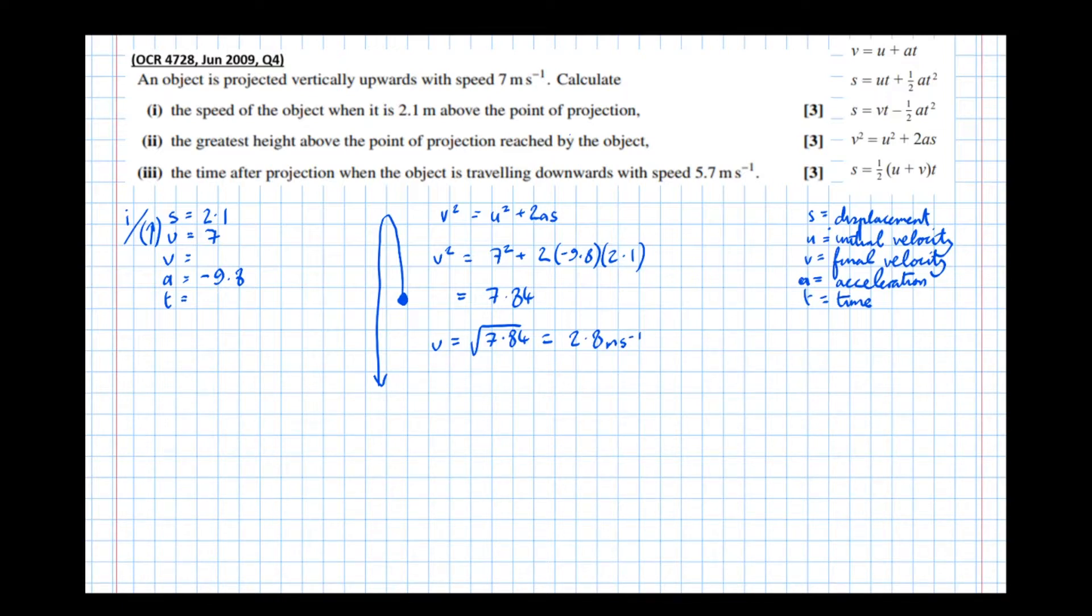Now, if you'd have got a negative value for velocity, which is perfectly plausible, you'd need to make it positive. It asks for the speed of the object, not the velocity, so the speed is always a positive number. So if you took down to be your positive direction, you'd have got negative 2.8 here. You'd have to convert that to 2.8.